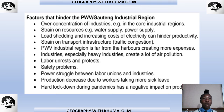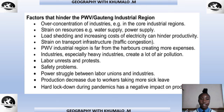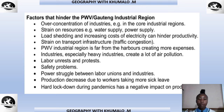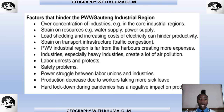Factors that hinder the PWV Gauteng industrial region include: over-concentration of industries in the core industrial region, which reduces productivity; strain on resources such as water and power supply; load shedding, which is a major problem in South Africa; increasing cost of electricity hindering productivity; and strain on transport infrastructure such as traffic congestion.